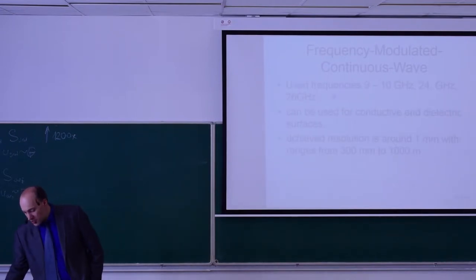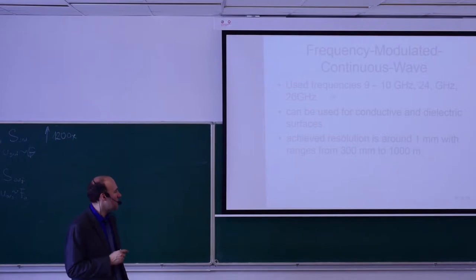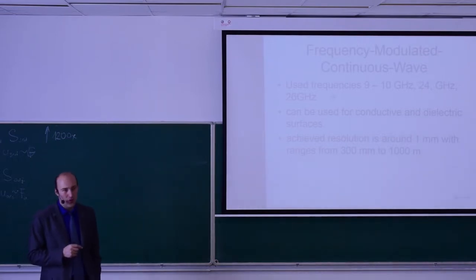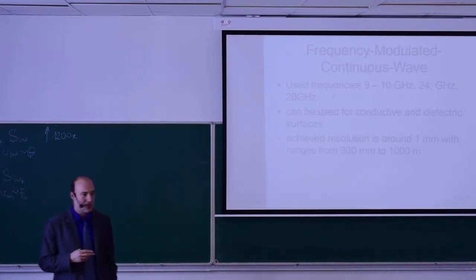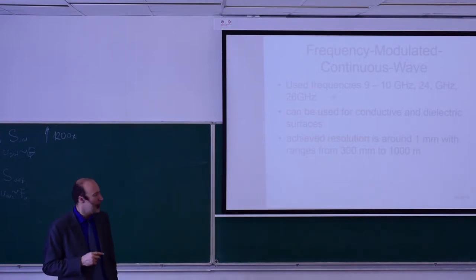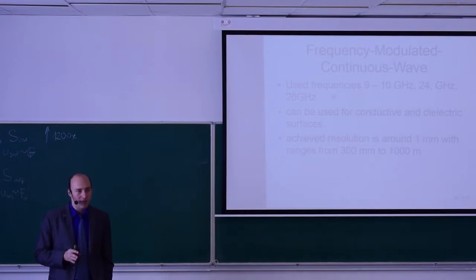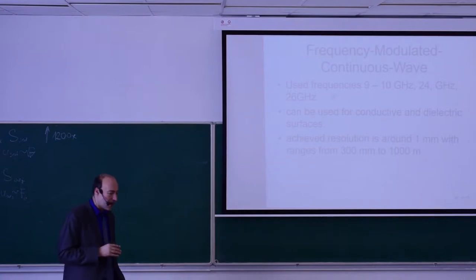The ranges for radar distance meters are roughly between 300 millimeters for frequency modulated continuous wave up to about one kilometer. In industrial systems it is around 10 meters, so industrial liquid level sensors work in a smaller range. The resolution you can expect is approximately one millimeter, so it is quite accurate.